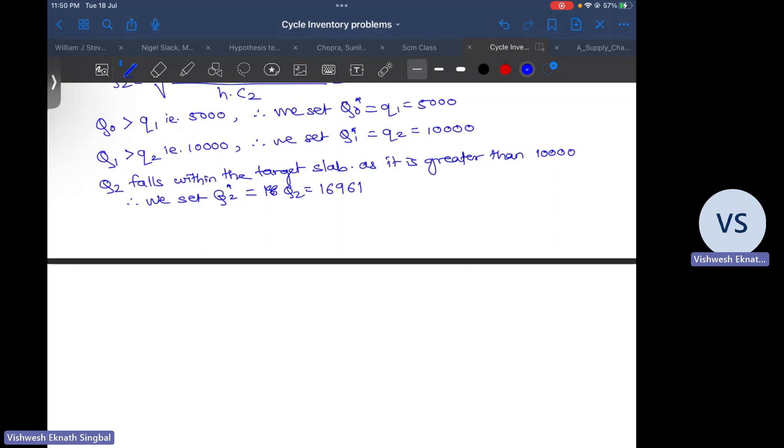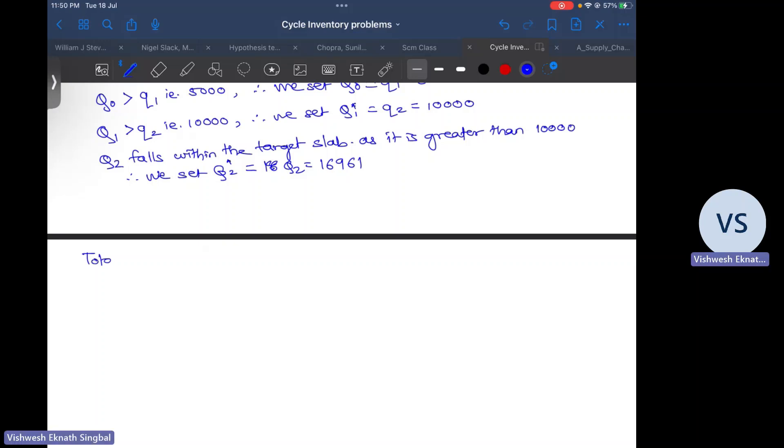So how is the total cost calculated for this kind of a situation? Given as total cost defined for TC0 for the first price, it will be D by q0 star into S ordering cost plus v0 plus q0 star minus q0 into c0 h by 2 plus D by q0 star into again v0 plus q0 star minus q0. So if it is that particular quantity which falls in that slab into c0. When we substitute all the values, we will get $363,540.